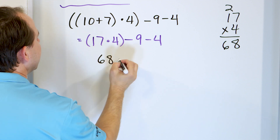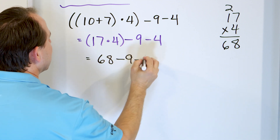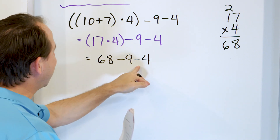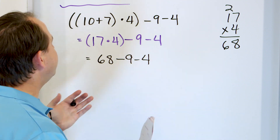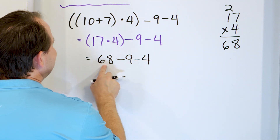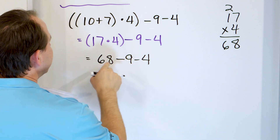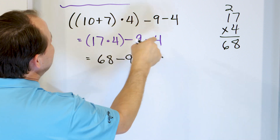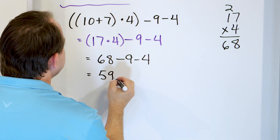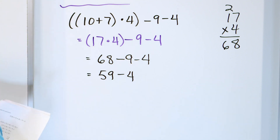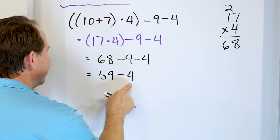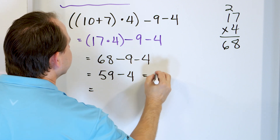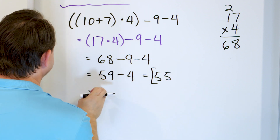This becomes 68, minus 9 minus 4. Now we have two subtractions, and we do them left to right. What is 68 minus 9? If it were minus 10 it'd be 58, but it's minus 9, so it's 59. Then 59 minus 4: 9 minus 4 is 5, so that gives us 55. And 55 is the final answer.